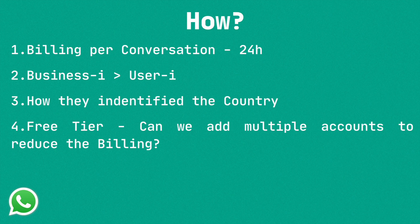The third point is how they identify the country. In order to send messages, we have to use the country code in front of our number — meaning in the API requests we have to provide the country code. From the country code in the request, they understand which country you are targeting and charge accordingly.